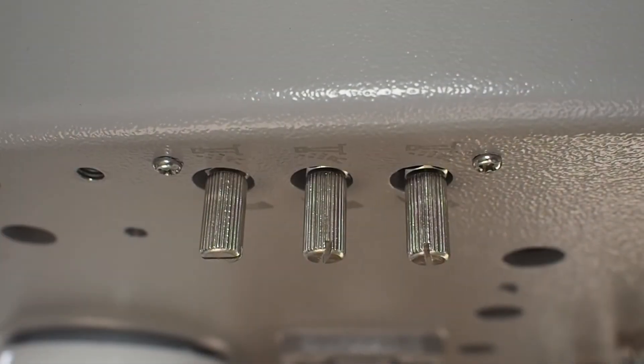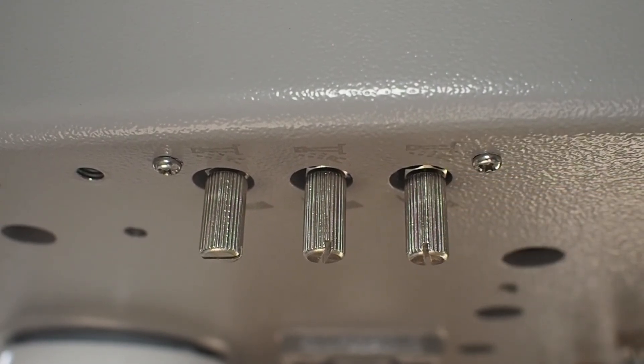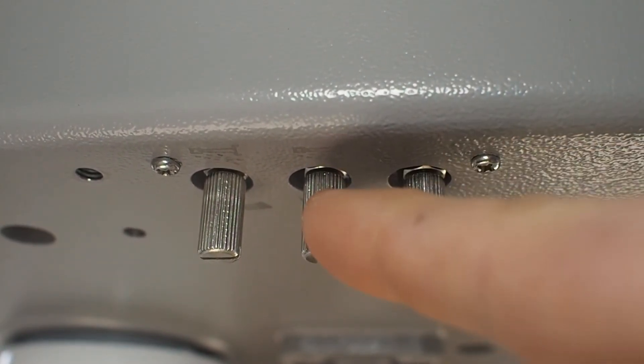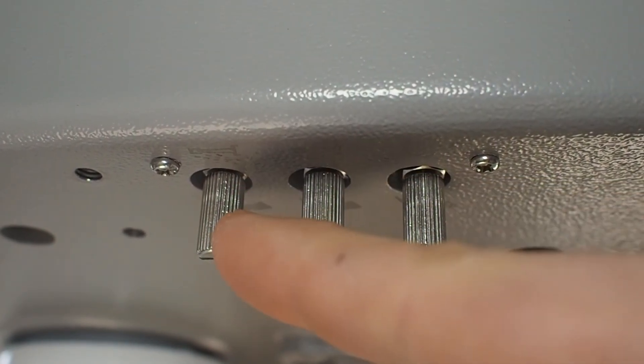There are three knobs. This one controls the first micromotor air. This one controls the second micromotor air. And this one the turbine air.